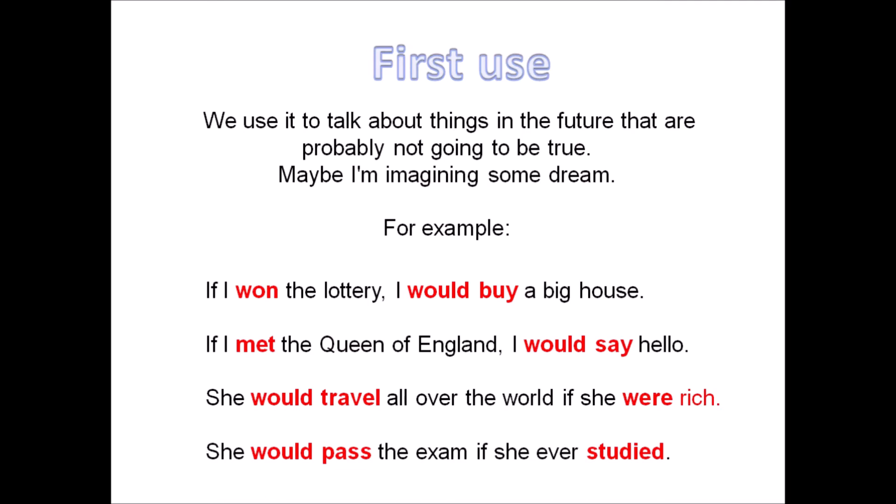So this is why we're going to use this second conditional. If I met the Queen of England, I would say hello. Guys, what are the chances of me meeting Queen Elizabeth? It's impossible. Queen Elizabeth is the most protected woman in the world. She's an elderly woman. Now check the third one. She would travel all over the world if she were rich. Guys, is she rich? No, she's not rich. So the possibilities of her being rich is really small. It's almost impossible.